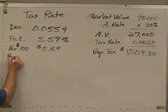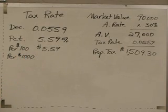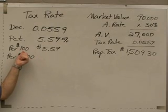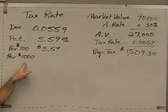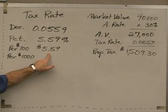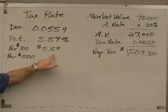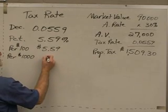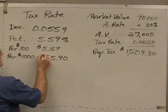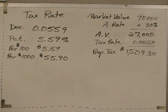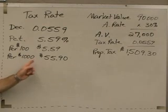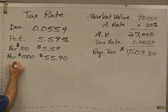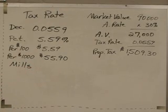Now, what about per thousand? Well, if we're paying a little over $5 for every hundred dollars and we multiply this by 10, how much would we have to pay per thousand? We'd move the decimal one place to the right, which is the same as multiplying by 10. So we get $55.90 per thousand dollars. This is all exactly the same tax rate — we're just expressing it in different ways. And the reason I'm showing you these conversions is because we normally express tax rates in mills.